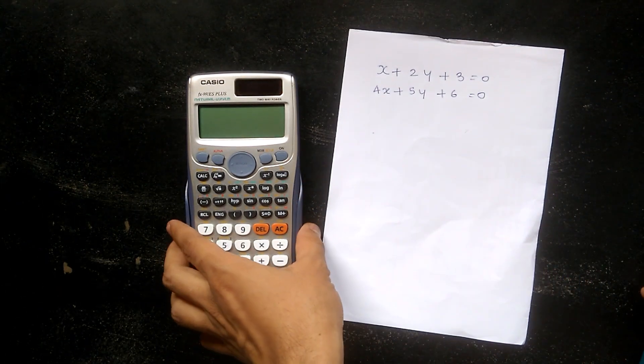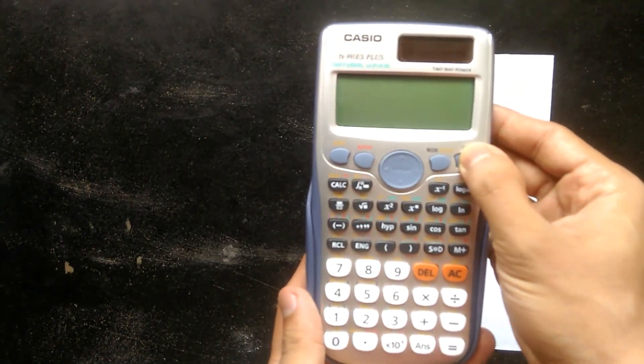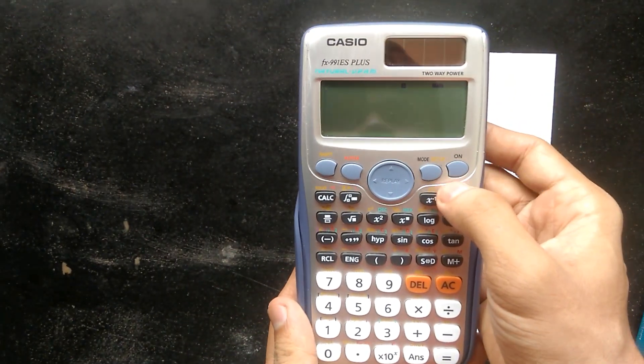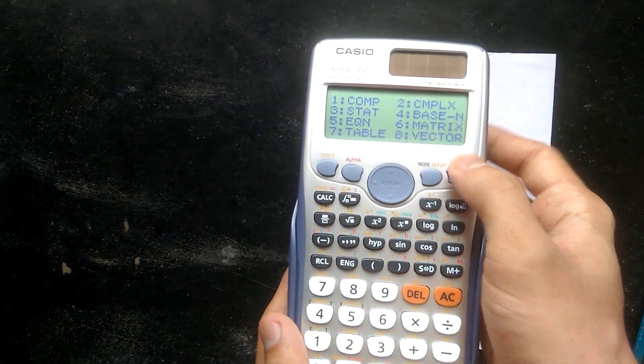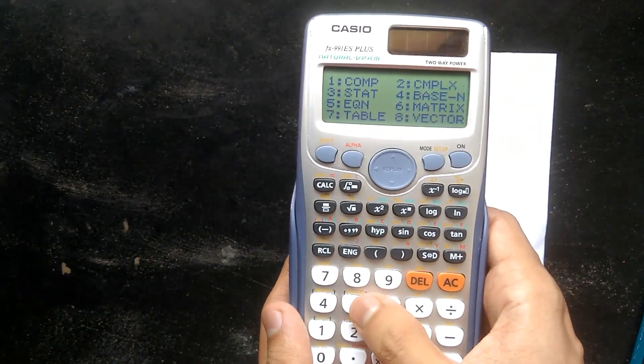To initiate this, we have to turn on the calculator first. Turn it on with the ON button, then change the mode with the MODE button. We have these options, equation number 5, so press number 5.